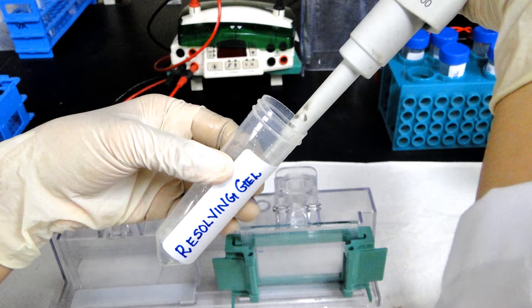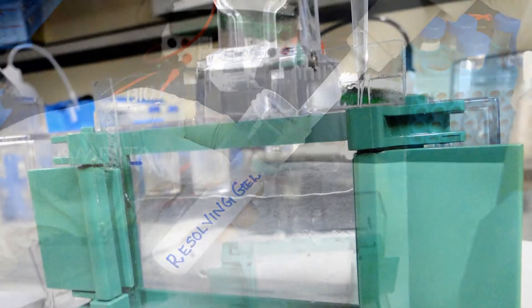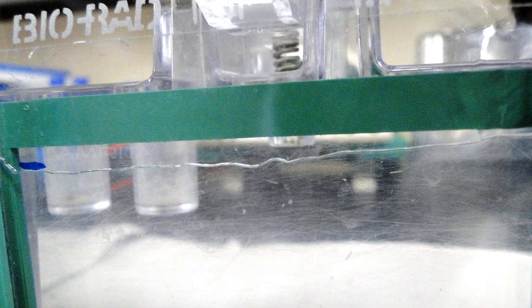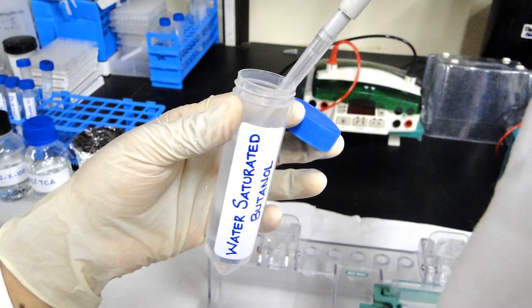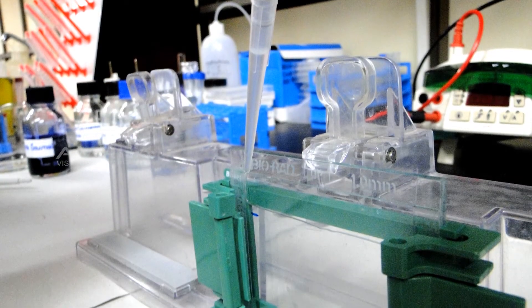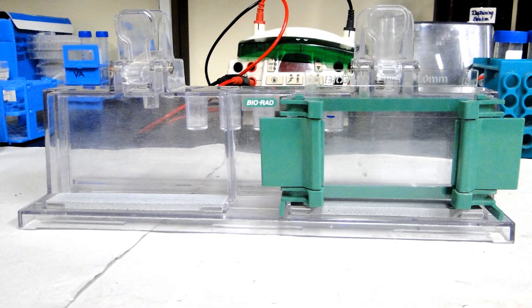Once the TEMED is added to the mix, immediately pour the resolving gel into the glass plates up to the mark drawn. Pour 1 ml of water-saturated butanol above the resolving gel layer. Allow the gel to polymerize for 20 to 30 minutes.